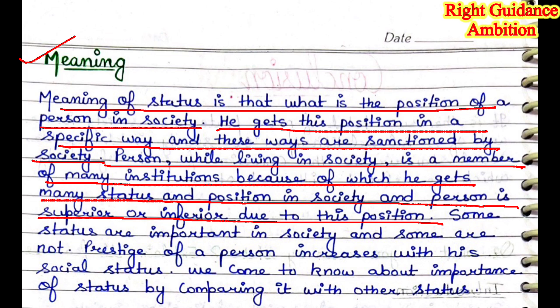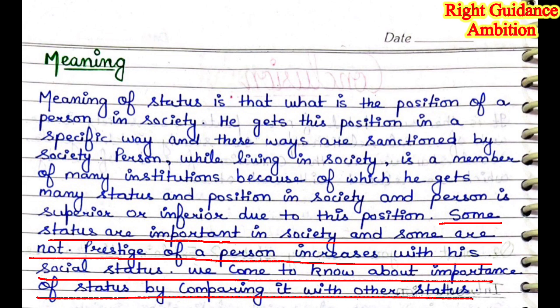A person, by living in society, is a member of many institutions, because of which they get many statuses and positions in society. A person is superior or inferior due to their position, and according to that position, it is decided whether a person is superior or inferior. Some statuses are important in society and some are not. Some statuses are very important with respect — if you get that status, people will respect you and listen to you. Some statuses are not so important in society. The prestige of a person increases with their social status. We come to know about the importance of status by comparing it with other statuses.